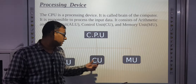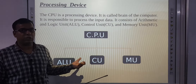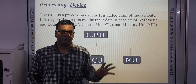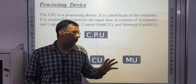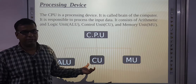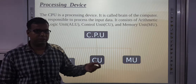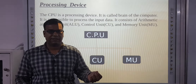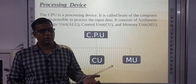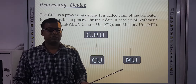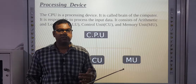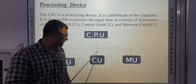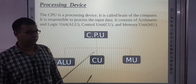Next is CU — Control Unit. Pure system ko, pure computer ko, kaun control karega? Control unit. Suppose input devices se data input ho raha hai, process ho raha hai, aur jo result generate ho raha hai — un sab ko kaun manage karega? Control unit.